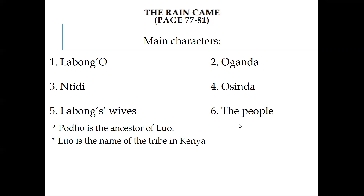The people made Labung O sad or happy. In the story, the people were very sad during the running season because there was no rain. But after the meeting, they were happy because Labung O told them that Oganda would sacrifice her life for the people to get rain. And Hodu — Hodu is the ancestor of Lu, and Lu is the name of the tribe in Kenya, the name of the clan of the tribe in Kenya.